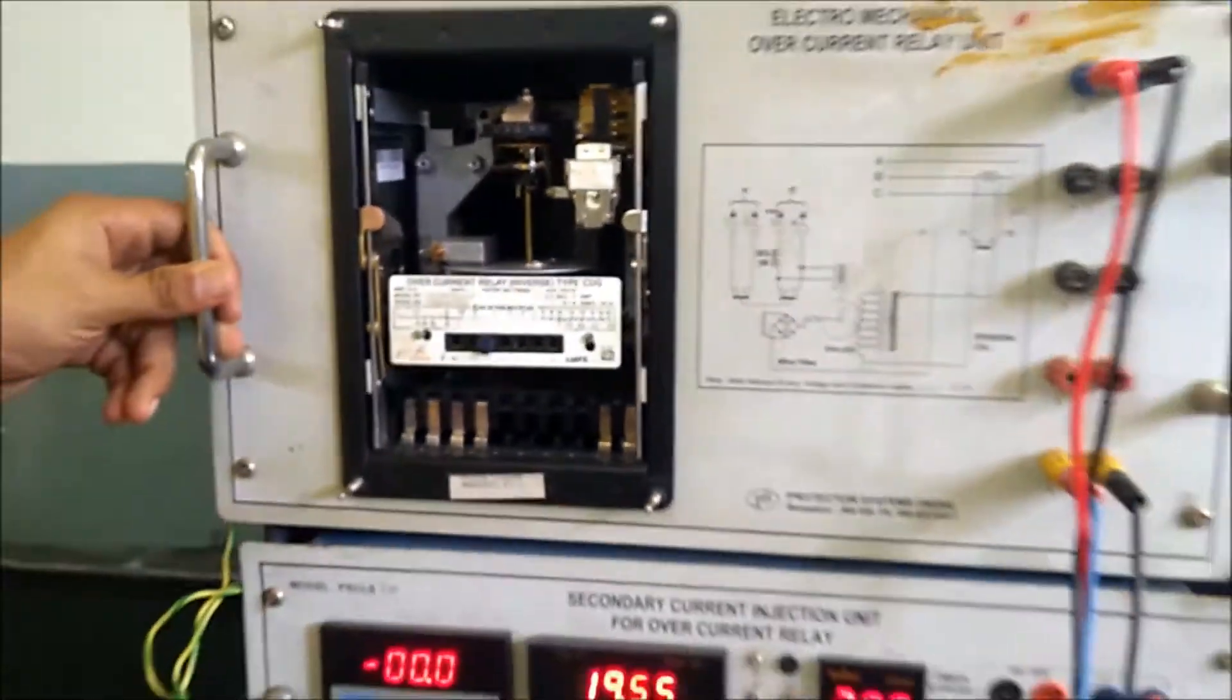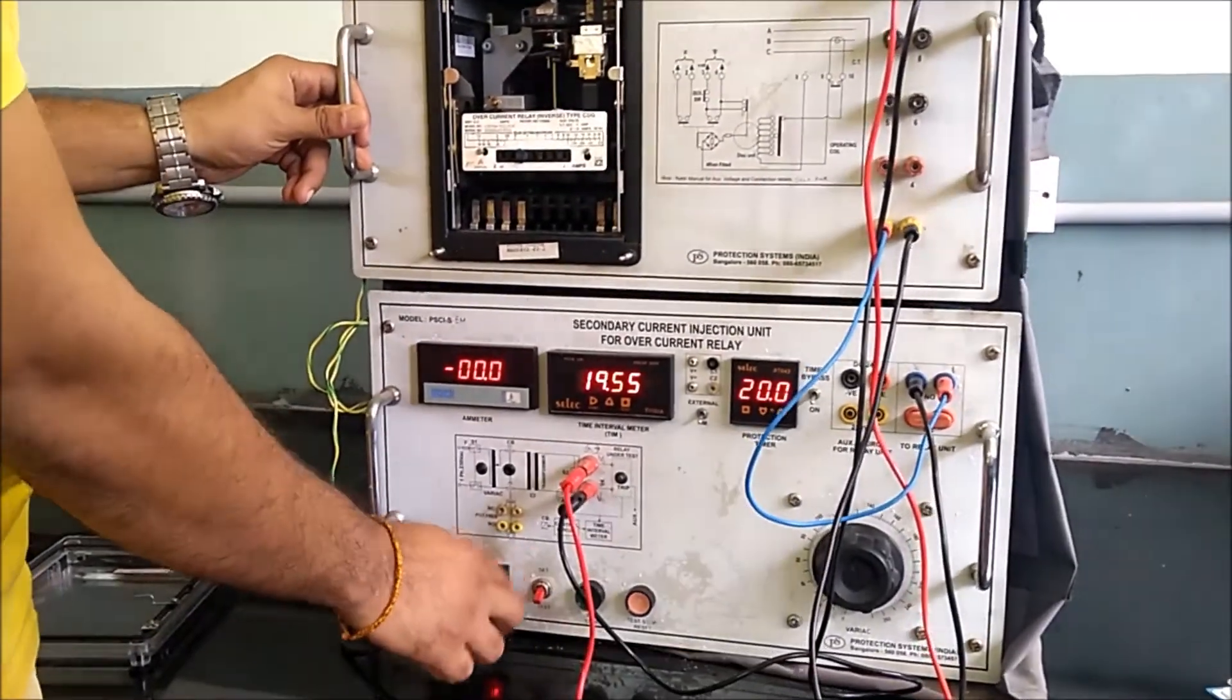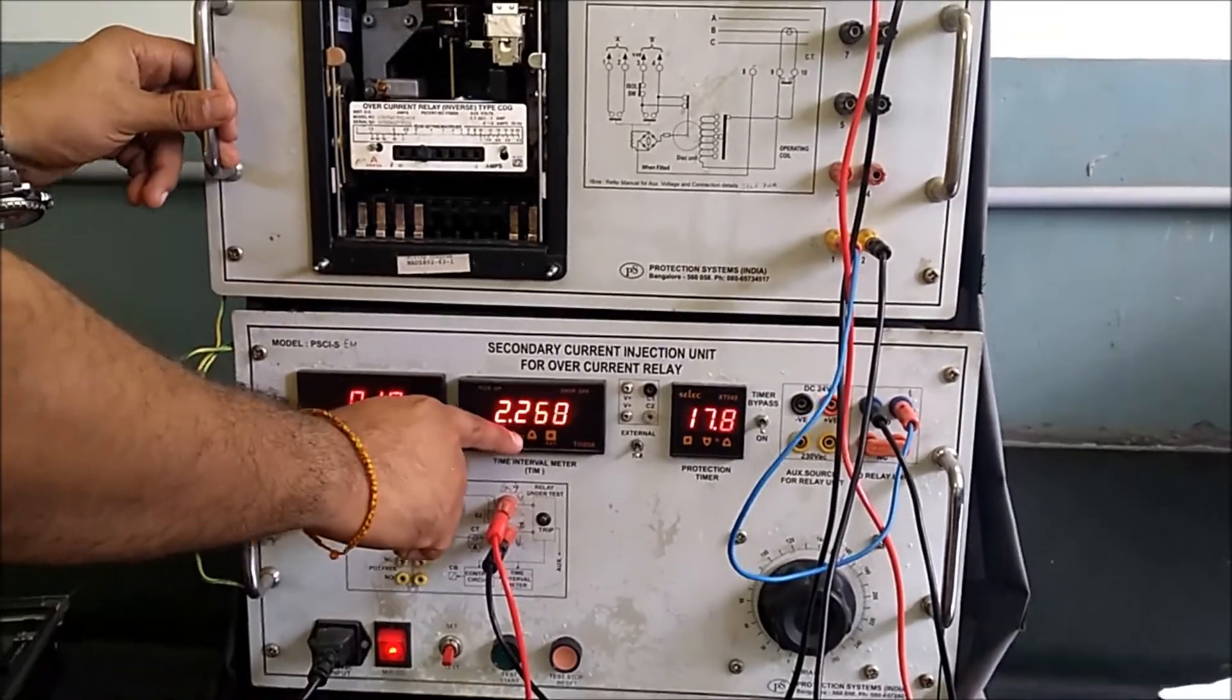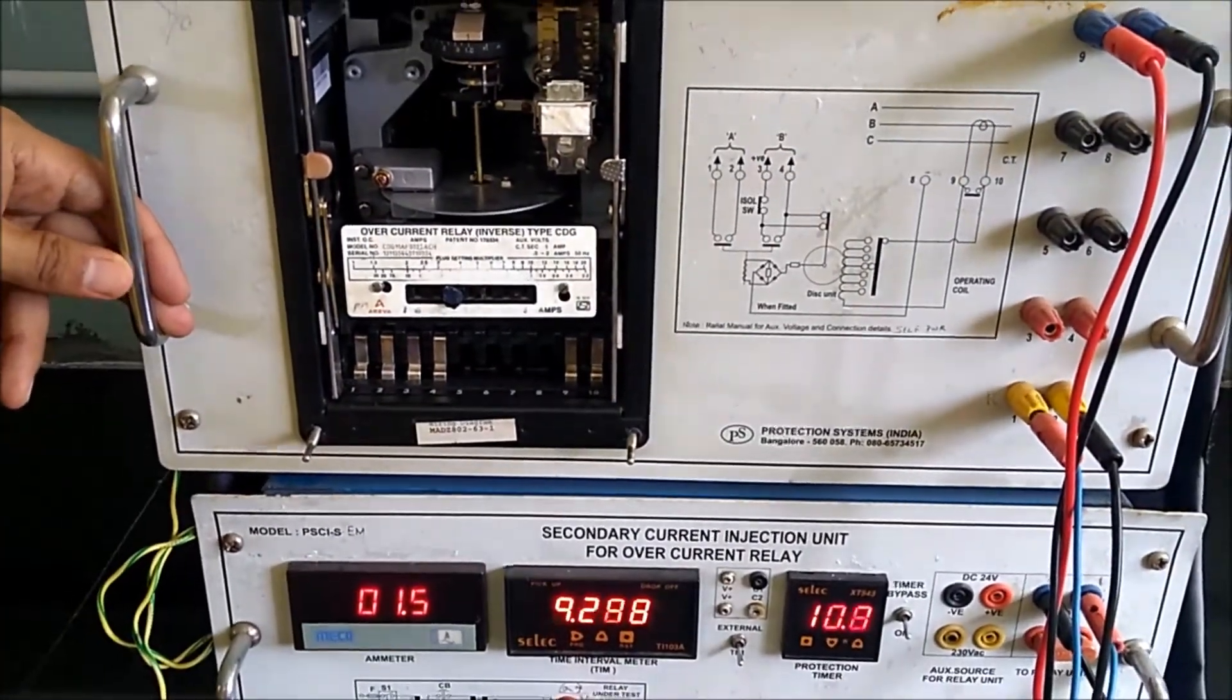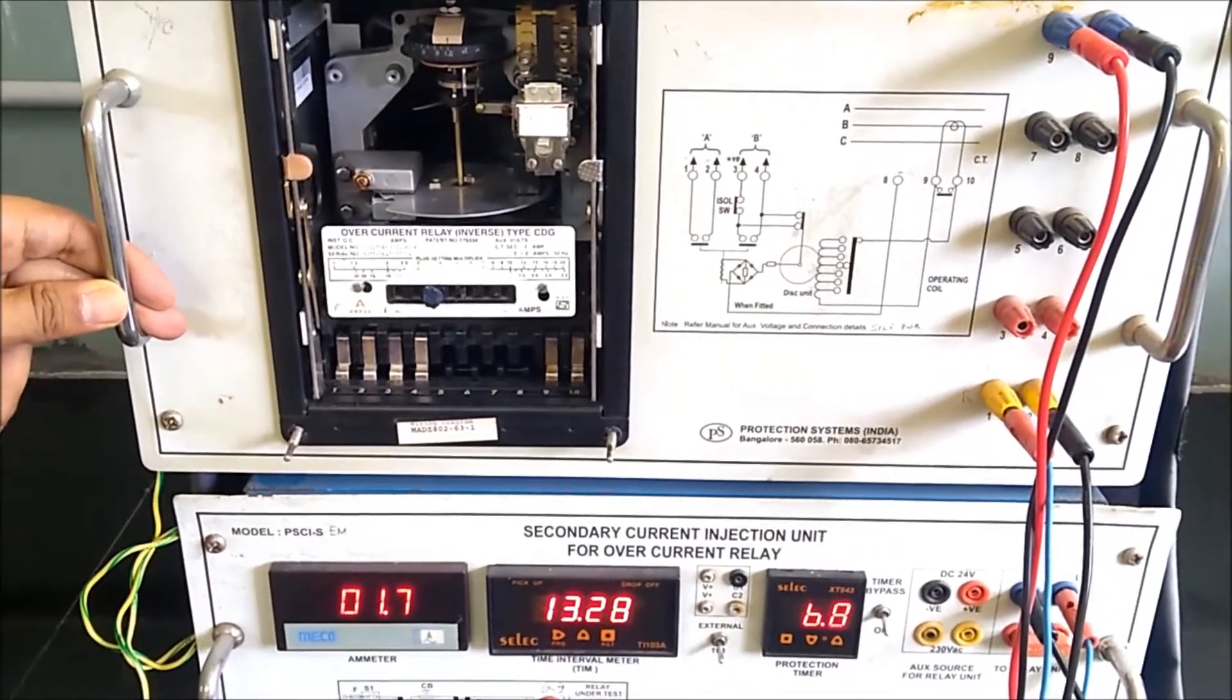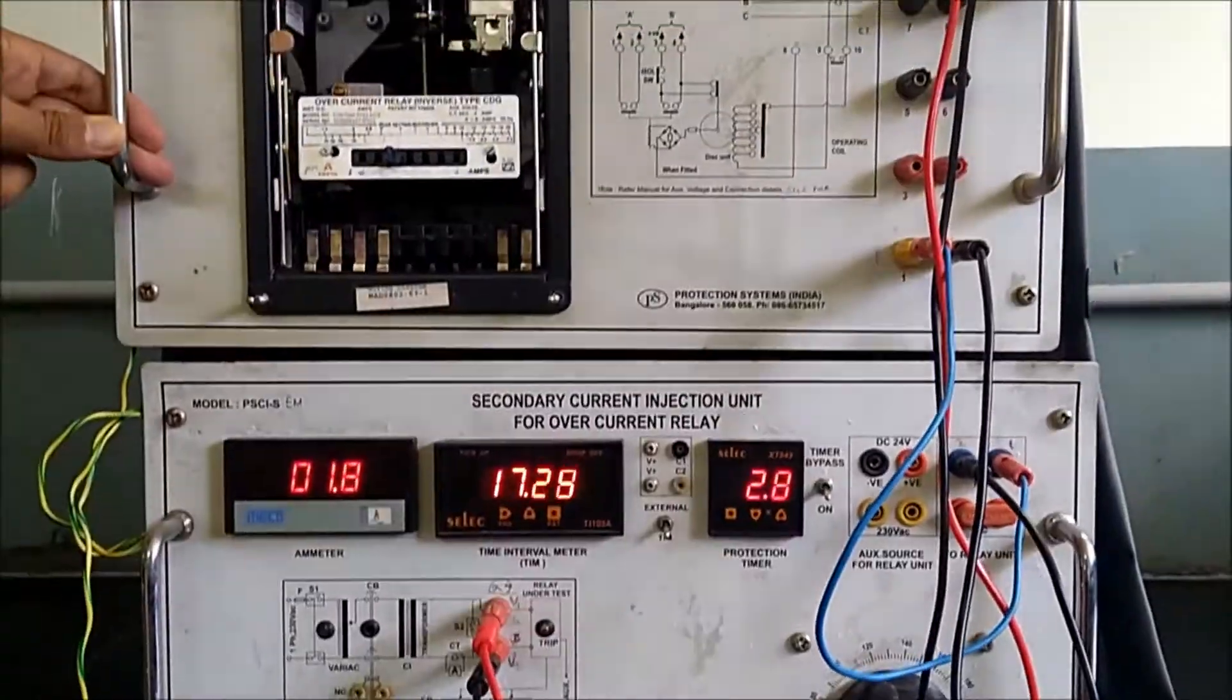Now we keep the switch in the test mode and press the start button. We can see that the disc is rotating as per the set calibration and the disc has detected that there is a fault current because there is a magnetic flux produced which is more than the required value. Now we can see that at one particular point the relay trips and we can hear the beep sound.